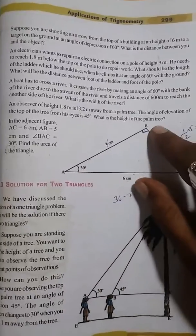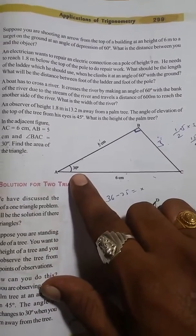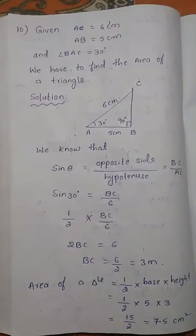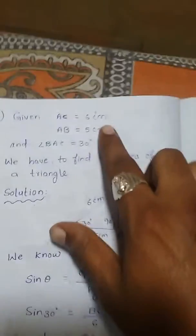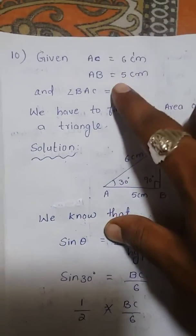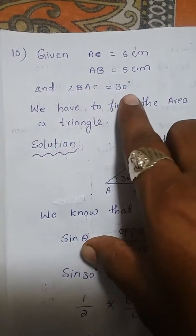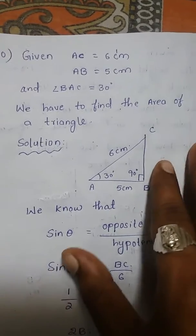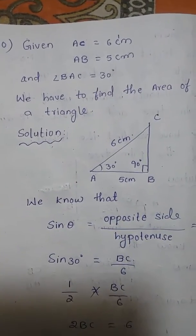AB is 5 centimeters, AC is 6 centimeters, and angle A is 30 degrees. What is given in the question: AC is 6 centimeters, AB is 5 centimeters, and angle BAC is 30 degrees. What the question is asking is to find the area of the triangle.